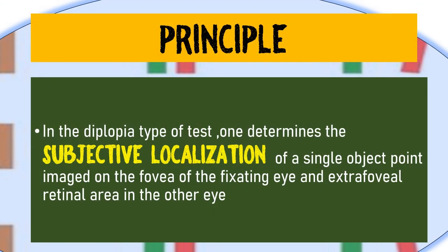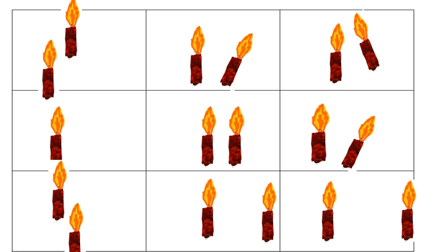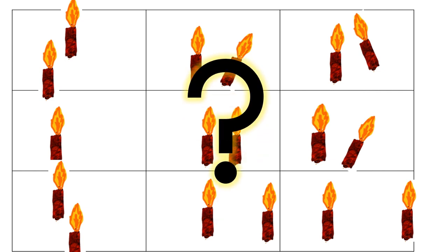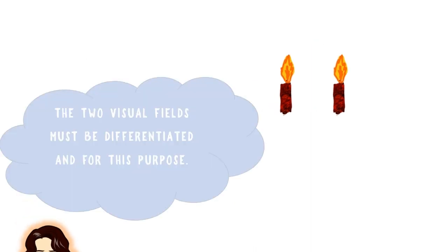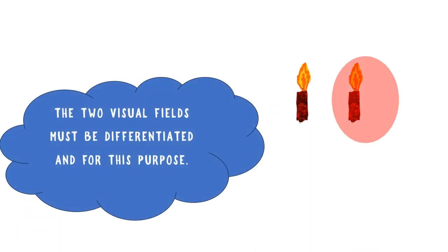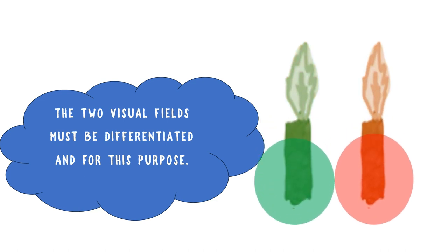In diplopia charting, one is basically determining the subjective localization of a single object which is pointing as an image on the fovea of one fixating eye and on the extra-foveal point of the other eye. To differentiate which image belongs to which eye, you put a red filter in front of the right eye and a green filter in front of the left eye. This converts the images into red and green, making identification of the true and false images much easier.